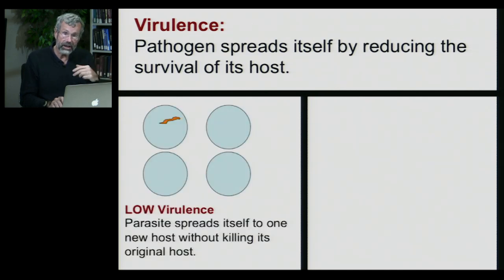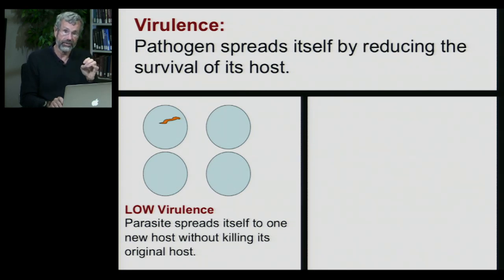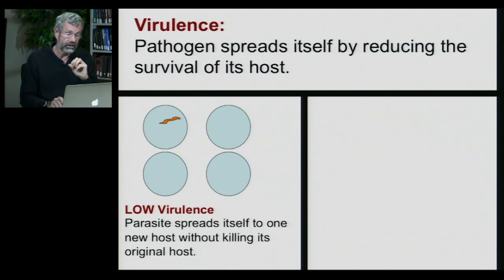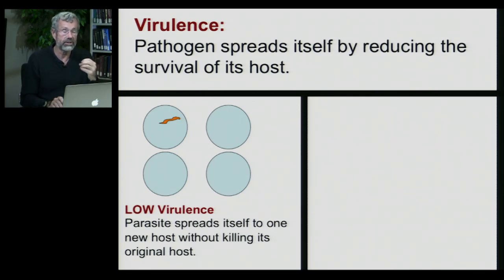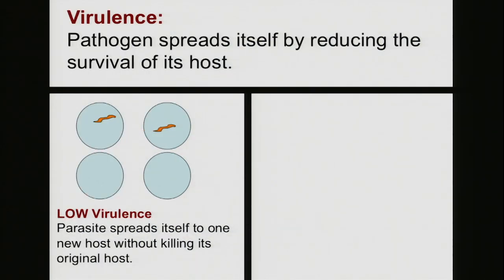Now let's consider how the parasite might be spread in a population. First, take a situation where it would make sense for the parasite to show a very low level of virulence. This would be where the parasite spreads itself to one new host without killing its current host — it doesn't hijack too many of the host's resources and just produces one offspring. That offspring gets into another host and the host lives. That's low virulence.